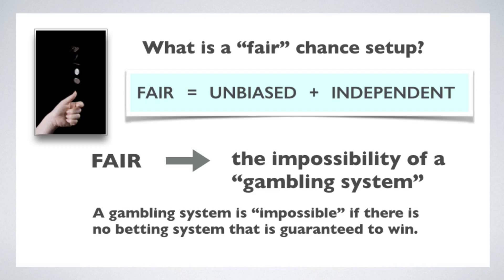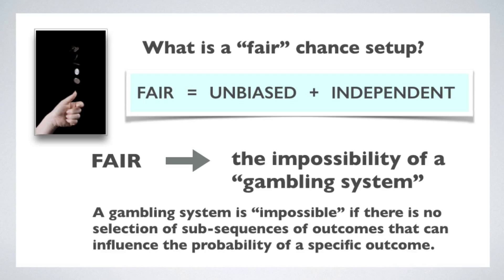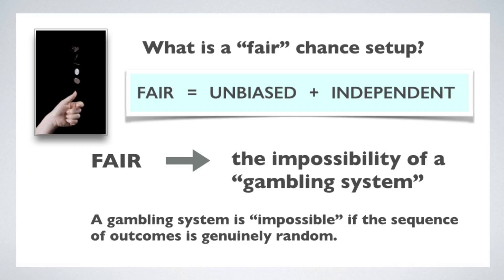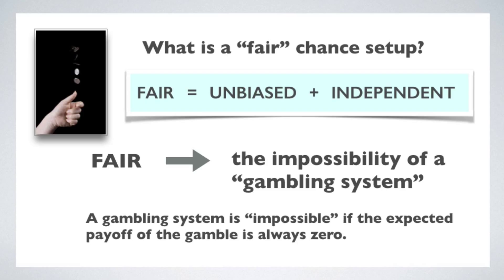A gambling system is impossible if there is, in principle, no betting system that is guaranteed to win. Why is this impossible? Because of the randomness — the lack of predictive regularities in the outcomes. Another way to say that a gambling system is impossible is to say that there is no selection of sub-sequences or subsets of outcomes that can influence the probability of a specific outcome, because all of the sub-sequences are independent, which is another way of saying that outcomes are genuinely random.